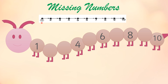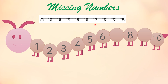We will start one by one. This is 1. What comes after 1? 2. Then after 2, what is missing next? 3. Here is 4. What is missing? 5. Then 6 is here. What is missing after 6? 7. So 7, 8, 9, and 10.